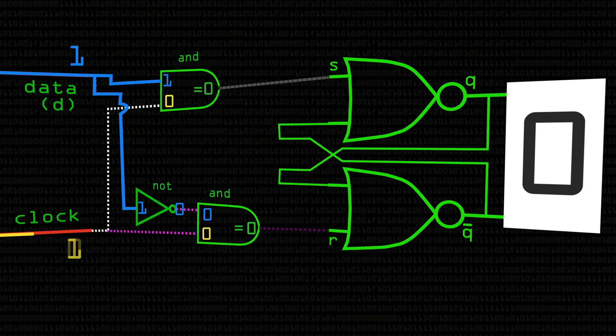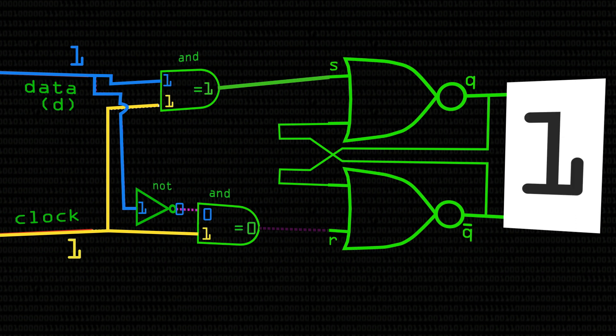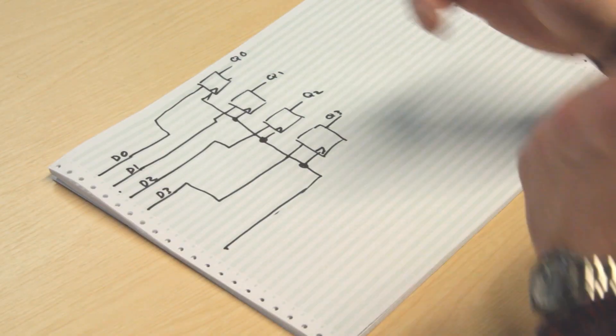So in our previous video on how memory works, we got to the point from storing one bit of information that we could set or reset it to the flip-flop where we could store a bit of information. And then we arranged four of them together in parallel so we could store four bits of information.